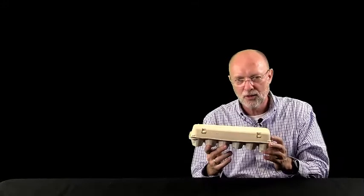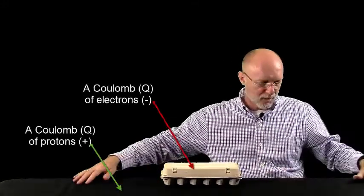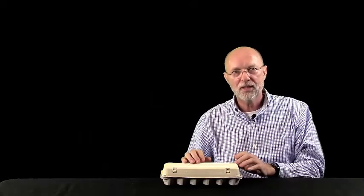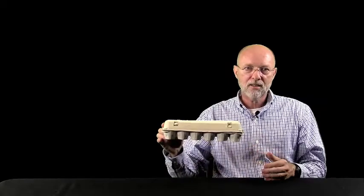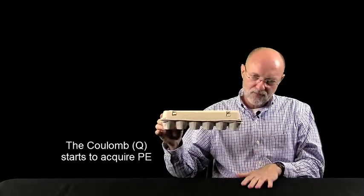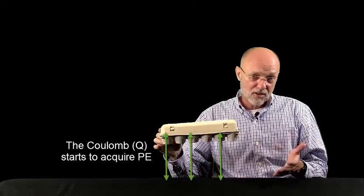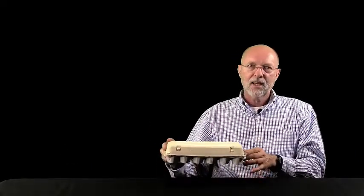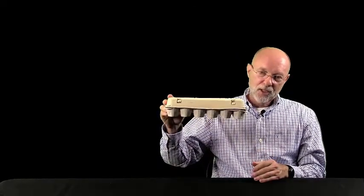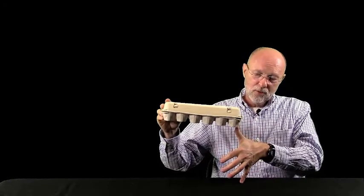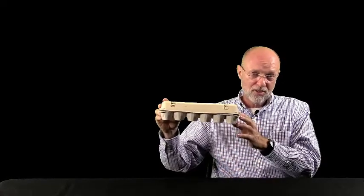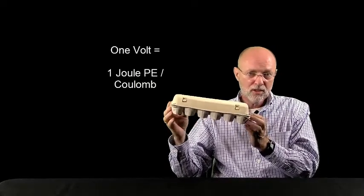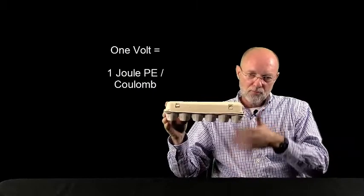Now, let's call this a Coulomb. Coulomb of electrons. The table is a table of protons. There is an attractive force, but there is no potential energy, because this has no ability to move. However, if I start raising this Coulomb over the proton field, then you'll agree it starts to acquire potential energy, because the attractive force between them wants to pull it back. And, as I raise this, at some point, you'll agree that it will acquire at least one joule of potential energy. So, now we're going to use that to define the volt. The volt is one Coulomb with one joule of potential energy.